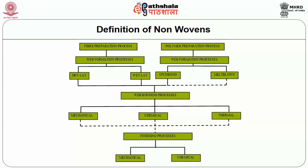The finishing could be either mechanical or chemical. Similarly, for the continuous filaments, the polymer preparation process is there. Then post-polymer preparation, you have to go through the web preparation process. The web preparation process could be either spun-bonded or could be melt-blown. Then the consolidation or the web bonding process happens, which could be again through the mechanical, chemical or thermal process. Post this, the nonwovens again goes for the finishing, which could be either mechanical or chemical.